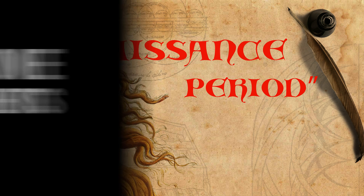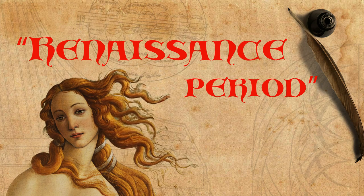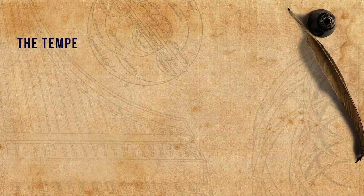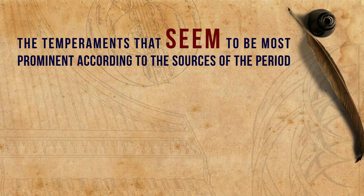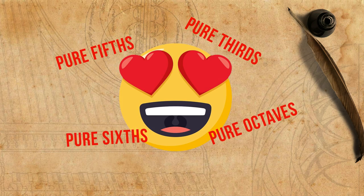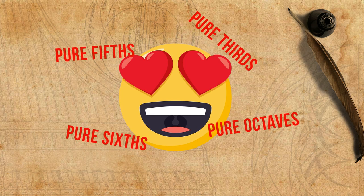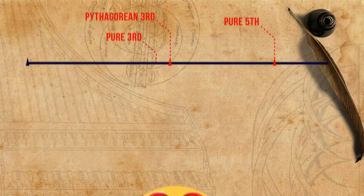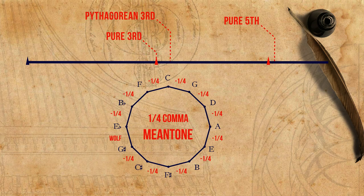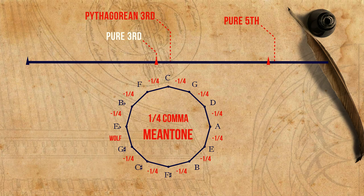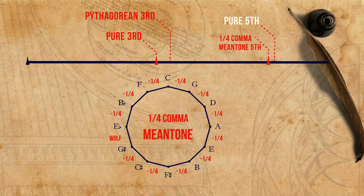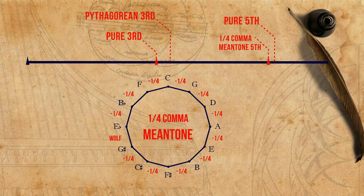If we jump forward to the middle of the 16th century, to the height of the so-called Renaissance period, we find that both the music and the tuning system have undergone great change. The temperaments that seem to be most prominent according to the sources of the period are what we nowadays call meantone temperaments. It allows us to get closer to the utopian idea of having all the consonant intervals pure in a polyphonic setting. This is of course not possible, but can be approximated by compromising the purity of the fifths, which in turn leads to purer thirds. In its extreme form — quarter-comma meantone — the thirds are absolutely pure, and the fifths are very much not so. For comparison, this is how a pure fifth sounds, and this is the quarter-comma meantone fifth, which is smaller by a quarter of a syntonic comma.